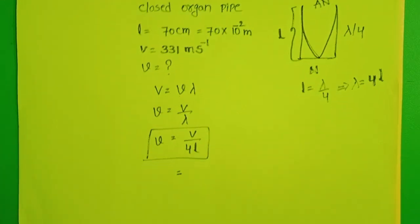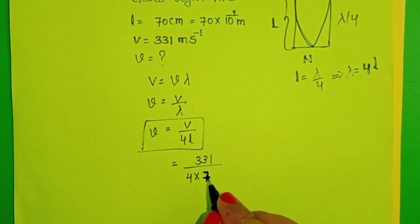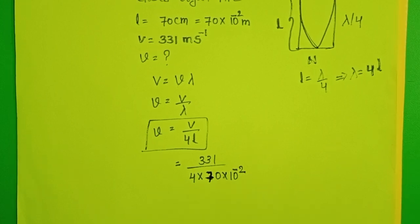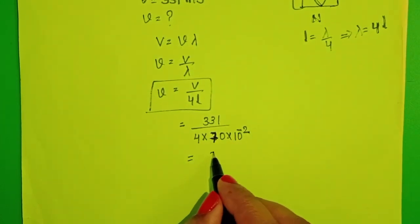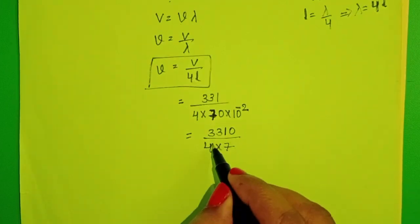Now substitute the values. Velocity 331, length of the pipe is 70 cm. Write 70 into 10 power minus 2 meters. Now simplify this.